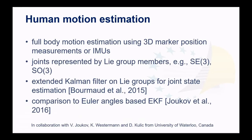Regarding human motion estimation, there are two examples: one using 3D marker positions and IMUs. The reason we decided to use Lie Groups here is because it enabled us to estimate more accurately the state of the human body by avoiding gimbal lock, and also by representing more consistently the uncertainties of such joints. We used the extended Kalman filter on Lie Groups, which was proposed by Bućko and associates, and compared it to our colleagues' previous implementation of Euler angles-based EKF. This was done in collaboration with Vladimir Zhukov, Ken Westerman, and Dana Kulic from University of Waterloo, Canada.